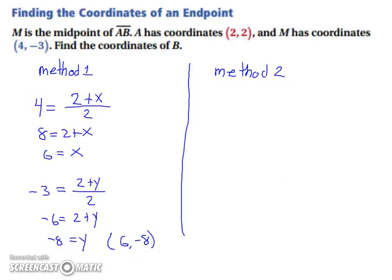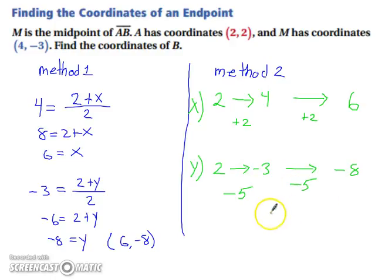Let's look at method 2. How far did you travel to go from 2 to 4? So to go from 2 to 4, you went up 2. So that means to go to the next place, you've got to go up 2. So your x's will be 6. Now let's look at our y's. We're going from 2 to -3. Well, you've traveled down 5. So we're going to go down 5 more which brings us to -8. So our coordinate is (6, -8). Both methods will work and there are others as well. You can choose which one you'd prefer.